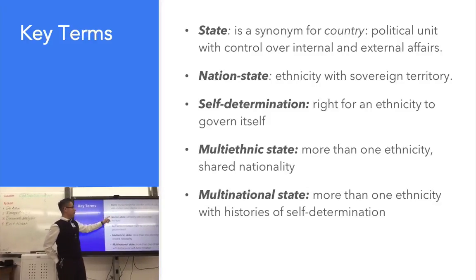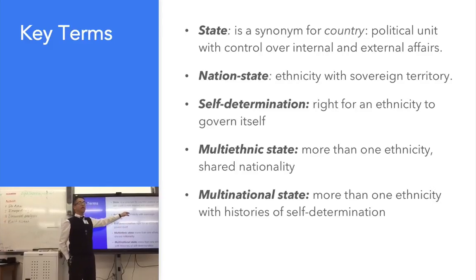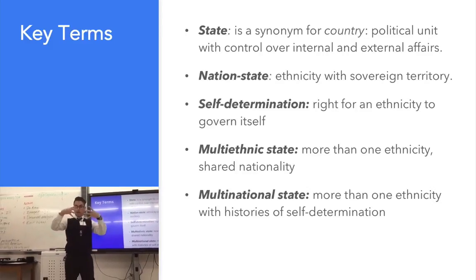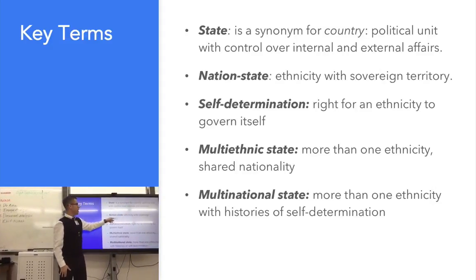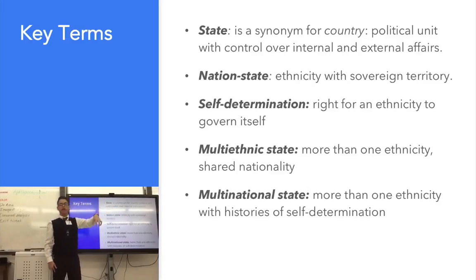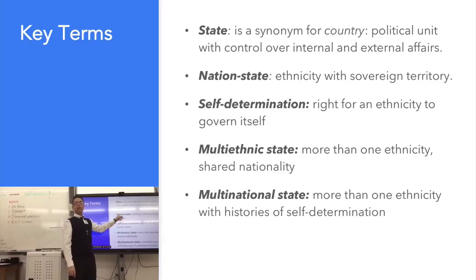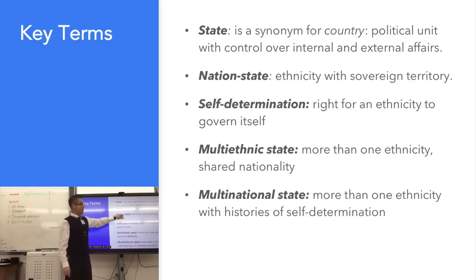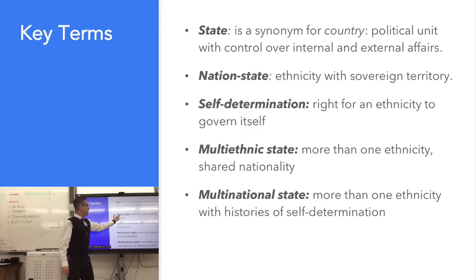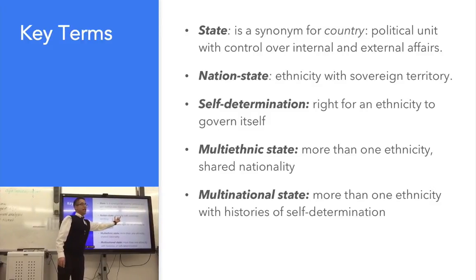Nation-state is a little different, because to be a nation-state, you have to have an ethnic group in that place, and that ethnic group has to have what we call sovereign territory — meaning they have control over themselves and their territory. An ethnicity with sovereign territory. For example, the Tigua nation in Isleta — that's an ethnicity with a sovereign territory. Notice I combined the word state with nation, so the word nation must mean the same as ethnicity.